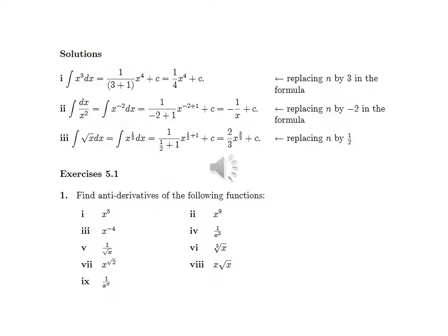The integral of the square root of x dx equals the integral of x to the power one-half dx, equal to x to the power (one-half plus 1) over (one-half plus 1), which equals two-thirds x to the power three-halves plus C, replacing n by one-half.